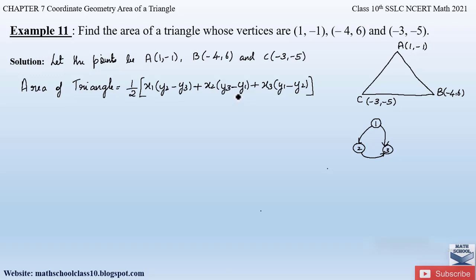So now we have got the formula. Using this formula we will find out the area of the given triangle. Let us assume point A to be here as (x₁, y₁), point B to be (x₂, y₂), and point C to be (x₃, y₃).